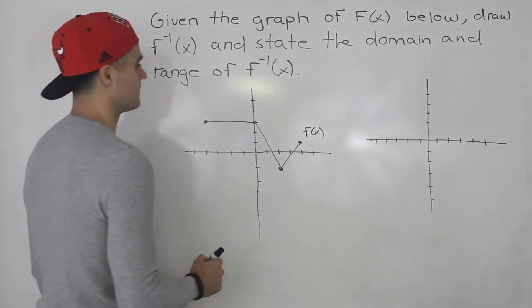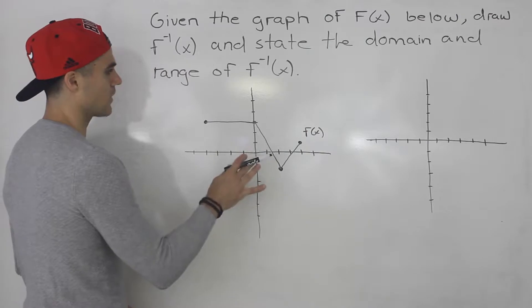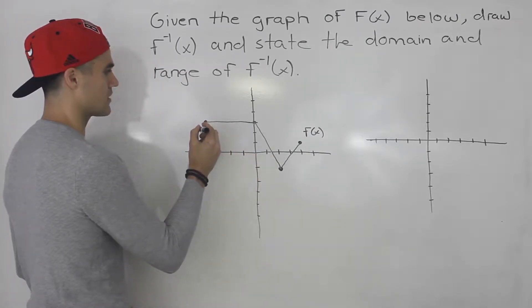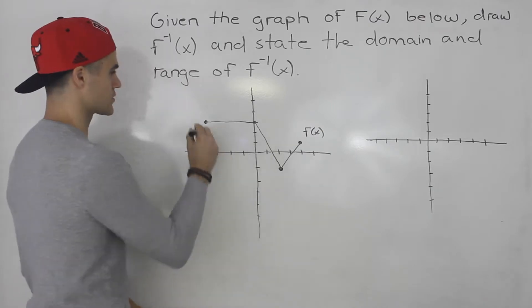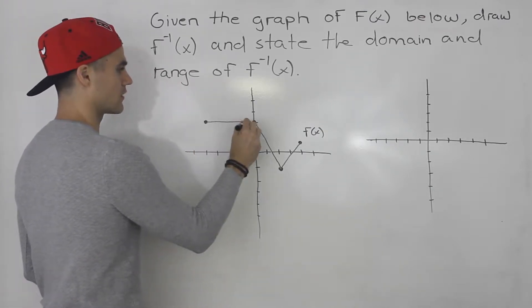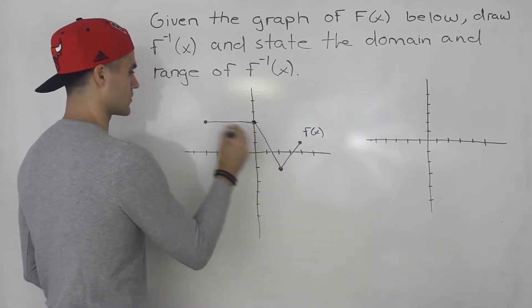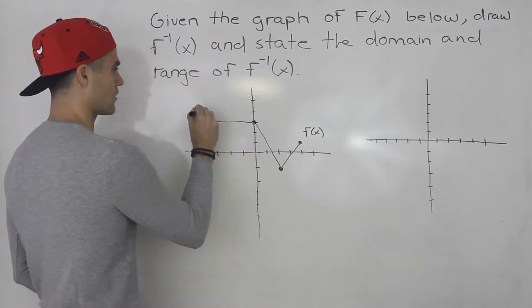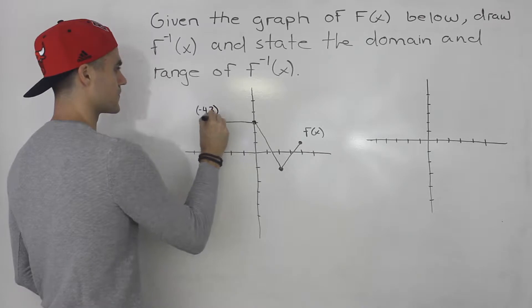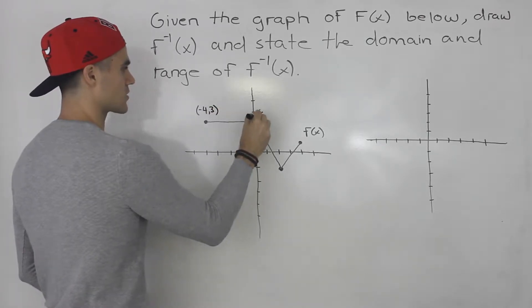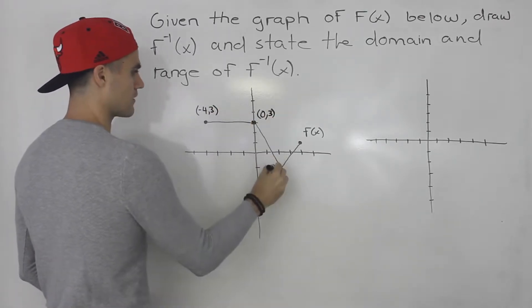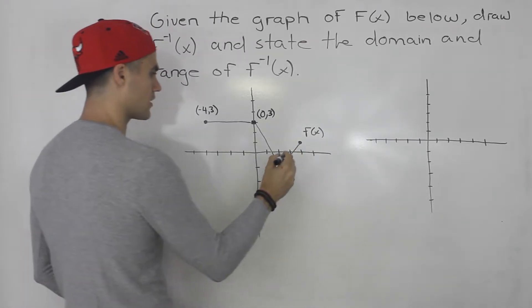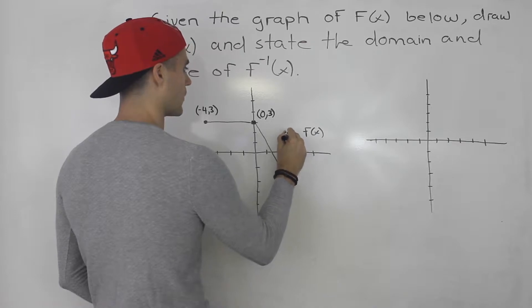The question is, how do we do that? Well, if you're given a graph like this, what I always recommend is getting the coordinates of all of the corners — this corner, this corner, this corner, and this corner. So this corner here has a coordinate of negative 4 and 3. This here has a coordinate of 0 and 3. And then this here has a coordinate of 2 and negative 1. And then over here, this is 4 and 1.